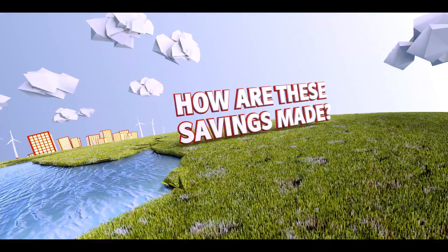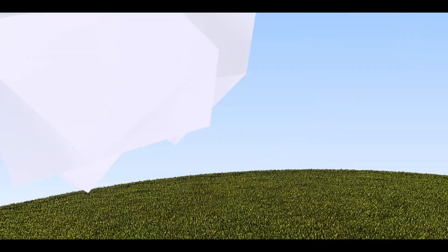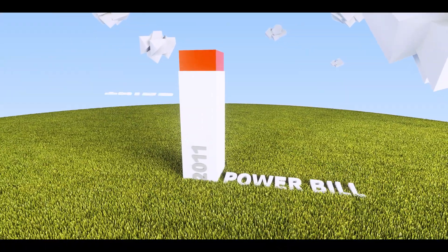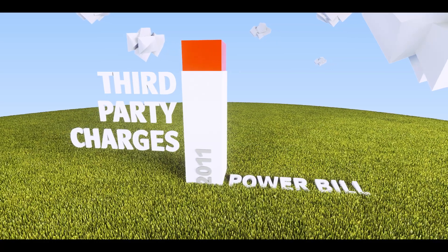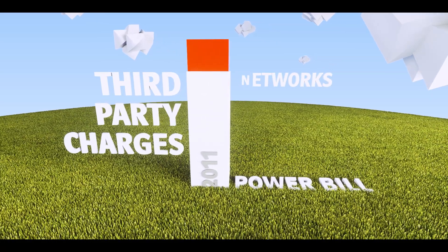So how are these savings made? A significant portion of any power bill covers what's called third-party charges – the cost of transporting energy over the networks, policy and taxes.